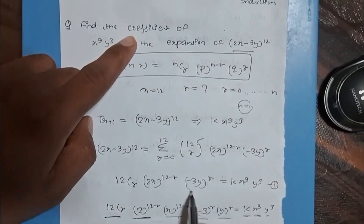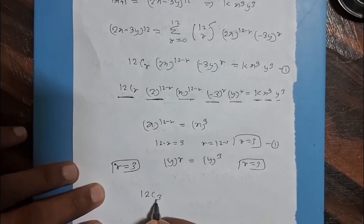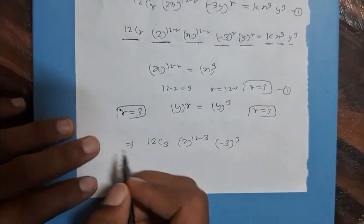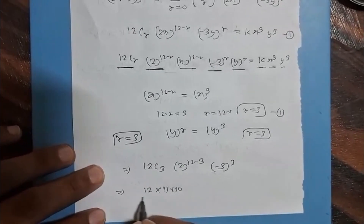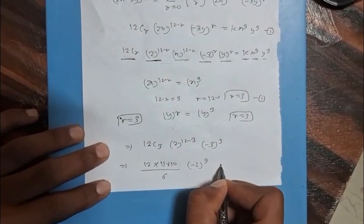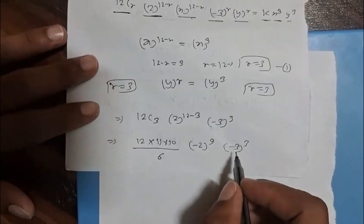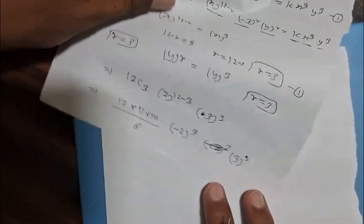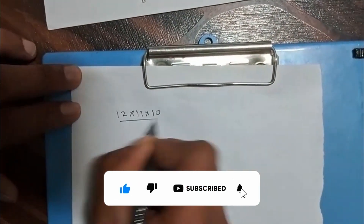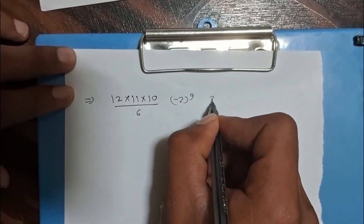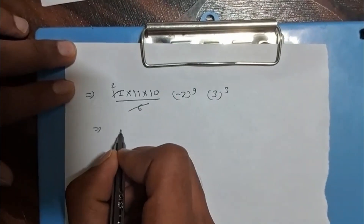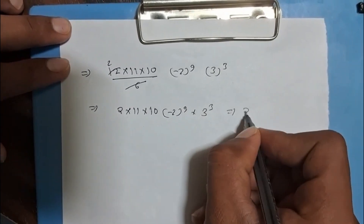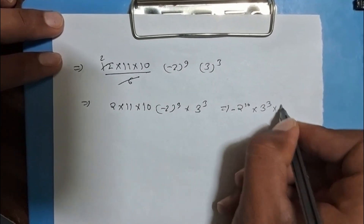Now we have r equals 3. Substituting into the expression, since we only need the coefficient, we compute: 12C3 times 2 to the power (12 minus 3) times (minus 3) to the power 3, which is 12C3 times 2 to the power 9 times (minus 3) to the power 3. This gives 12 times 11 times 10 divided by 6, times 2 to the power 9, times minus 27. After cancellation, we get 2 times 11 times 10 times minus 2 to the power 9 times 3 to the power 3, simplifying to minus 2 to the power 10 times 3 to the power 3 times 11 times 10, which is our final answer.